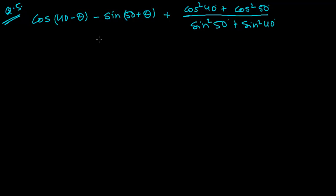Hi friends, this is another type of problem in Trigonometric Ratios of Complementary Angles. The question is: cos(40 minus theta) minus sin(50 plus theta) plus cos squared 40 plus cos squared 50, all divided by sin squared 50 plus cos squared 40.